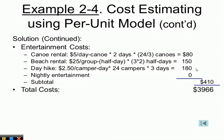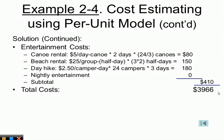Adding all subtotals — transportation, living costs, and entertainment — gives a total cost of $3,966. Dividing the total cost of $3,966 by 24 students gives the cost per student.